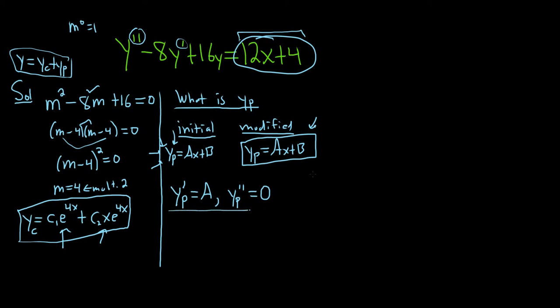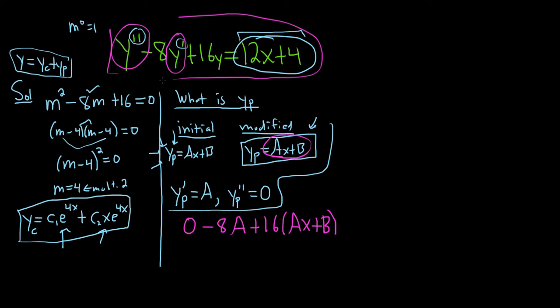Let's plug it into the DE. We have y double prime. That's simply 0 minus 8. Then we have y prime, which is a, plus 16 times y, which is ax plus b. And we set it equal to 12x plus 4.